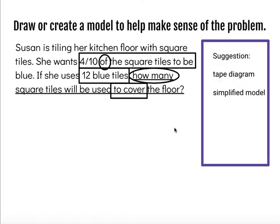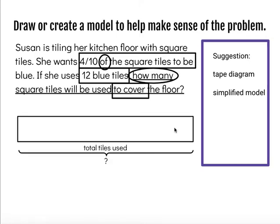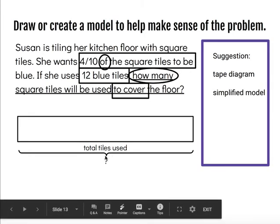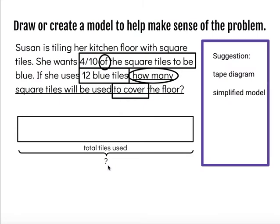So next I'm going to draw or create a model to help me make sense of the problem. And I'm going to use a tape diagram. The first thing I do with a tape diagram is I draw a rectangle to represent the whole. And in this case, my whole is how many total tiles are used. And I don't know how many that is, so I'm going to mark that with a question mark.